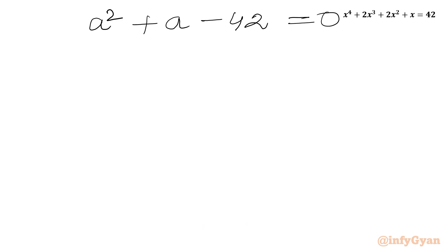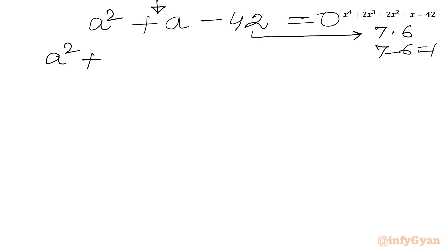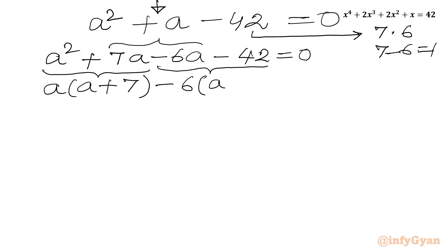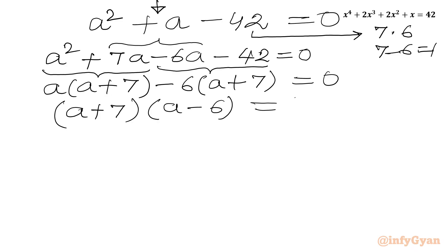The equation is quadratic and we can use the factorization method. The factors of 42 are 7 times 6, and 7 minus 6 is 1, which matches our middle term coefficient. So I can split the middle term a as 7a − 6a. Taking a common from the first two terms gives a(a+7), and taking −6 common gives −6(a+7), so we get (a+7)(a−6) = 0.